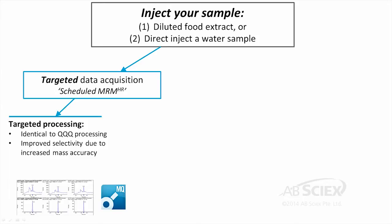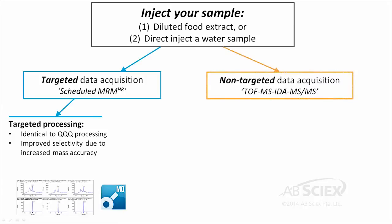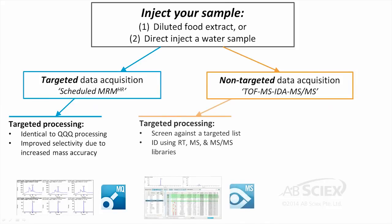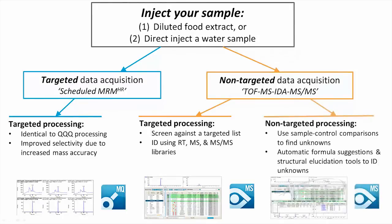Or, would you like to search for both targeted compounds and unknown compounds at the same time? Easily set up the TripleTOF system for non-targeted data acquisition. The mass spec will record every mass detected and collect MS-MS information on those detected peaks. You can then process your data against a targeted list or using the unique non-targeted data processing tools included in MasterView software.